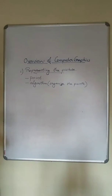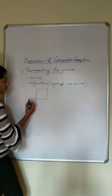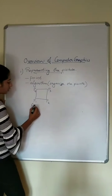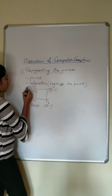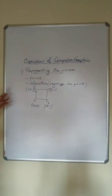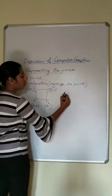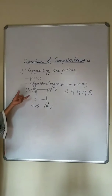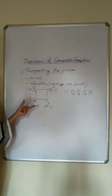For example, we want to draw a unit square. The points are P1, P2, P3, and P4, with coordinates (0,0), (0,1), (1,1), and (1,0). The algorithm can describe the square as the sequence P1, P2, P3, P4, P1. So the algorithm can describe the picture using this point sequence.